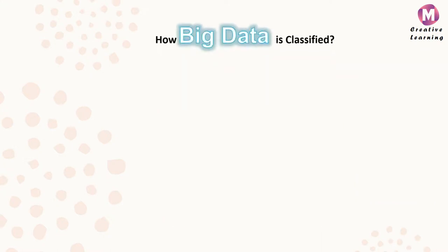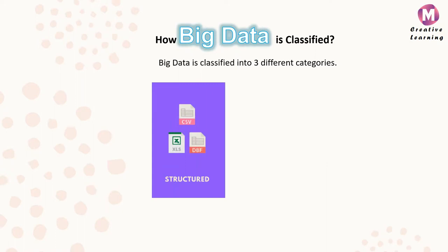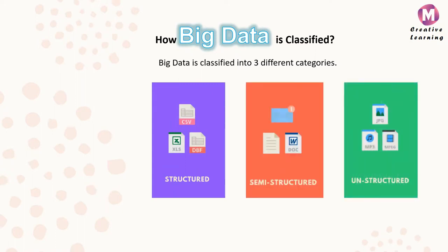How is big data classified? Big data is classified into three different categories: structured data, semi-structured data, and unstructured data.